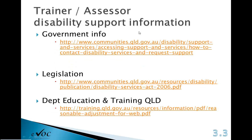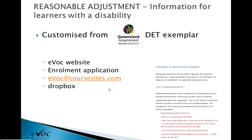There's disability support information available on a government site covering the relevant legislation — the Disability Services Act of 2006. There was also 2005 legislation around disability and education, mentioned in a previous lecture, requiring inclusive practice. Reasonable adjustment is defined as a modification or change that gives a person with a disability the same opportunities in training as a person without a disability. Adjustments need to be reasonable — that is, they need to consider the needs of everyone involved so that no one is disadvantaged, including other learners.